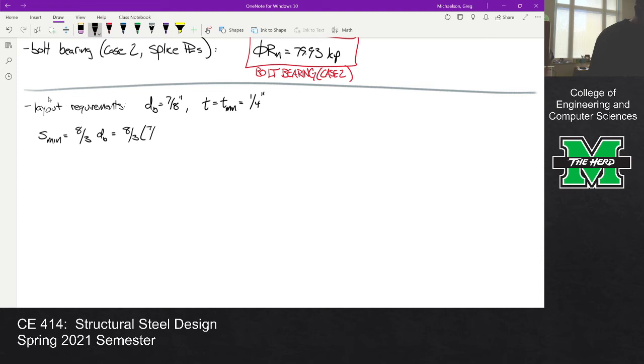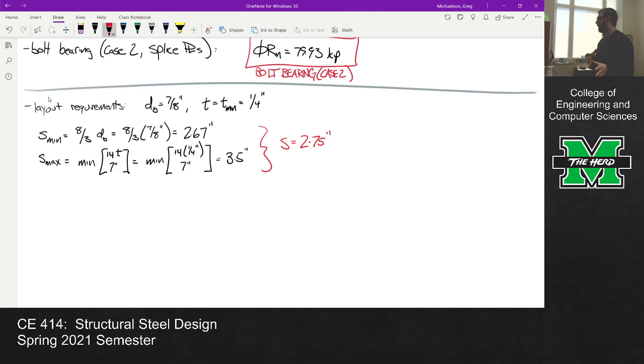So our s_min is 8/3 of the bolt diameter, so 8/3 of 7/8 inch, which is 2.67 inches. S_max is the minimum of 14*t or 7 inches, which is the minimum of 14 times a quarter or 7 inches. By observation you can see that top one's going to govern, so 14 divided by 4 is 3.5 inches. We actually have a pretty tight bolt spacing issue: it's got to be between 2.67 and 3.5.